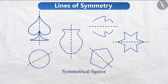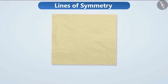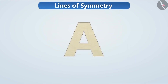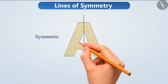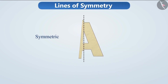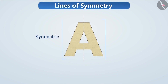Let's understand this with an activity. Take a piece of paper. Using scissors, cut the shape of the English alphabet A from it. Can you tell whether this figure is symmetric or not? Think for a while. Absolutely correct! If we keep the left half of it on the right half, they are seen to overlap each other perfectly. This shows that they are reflections of each other. Therefore, we can say that the letter A is a symmetric letter.